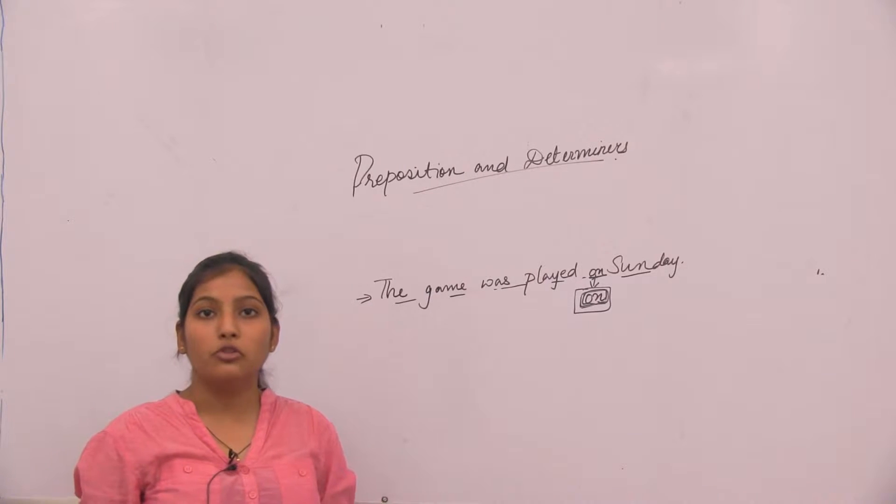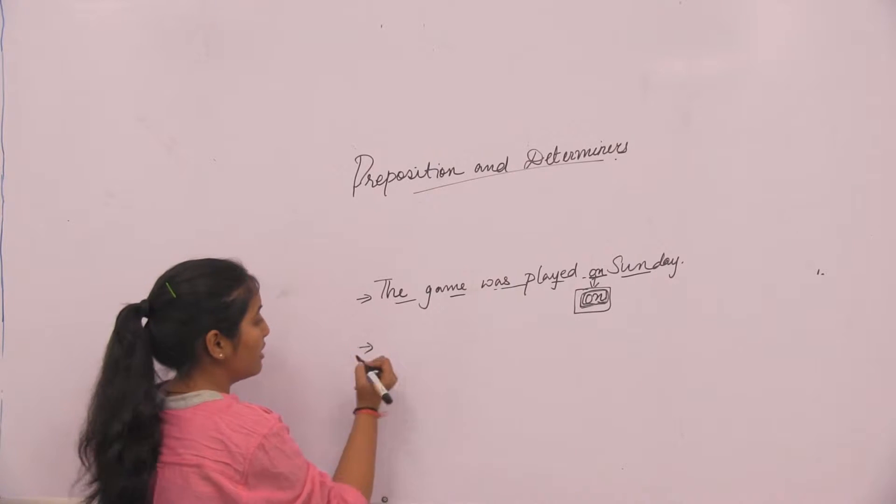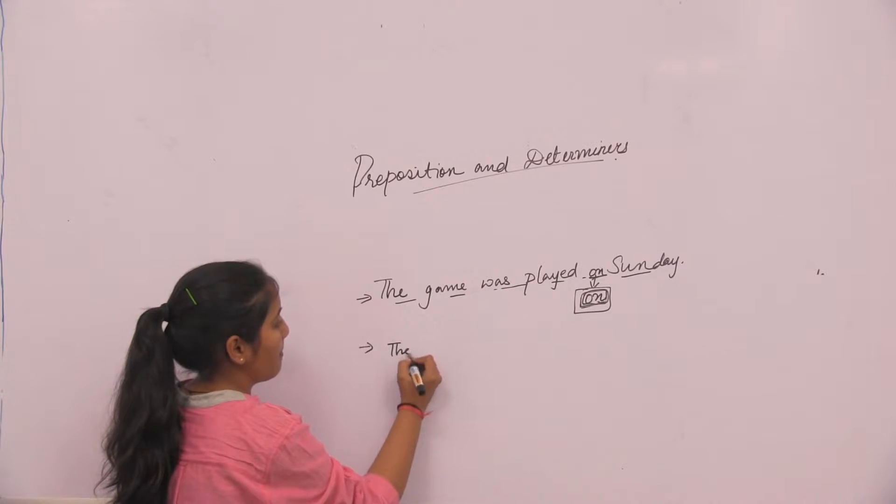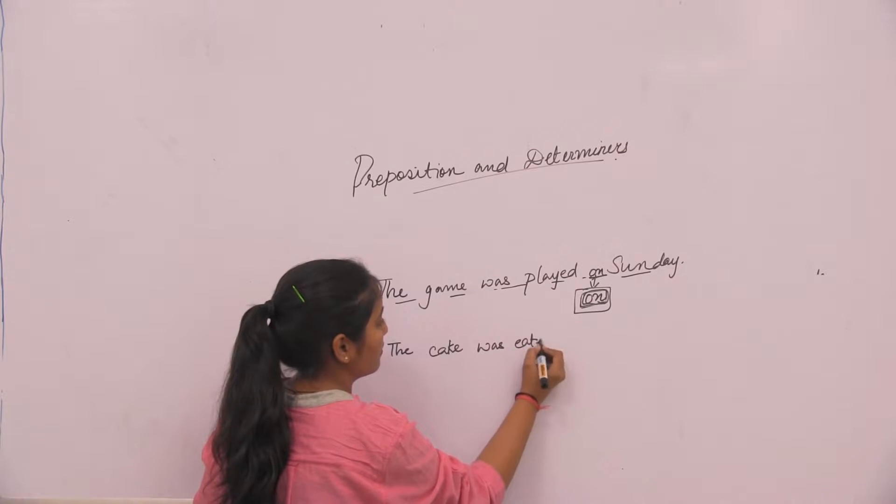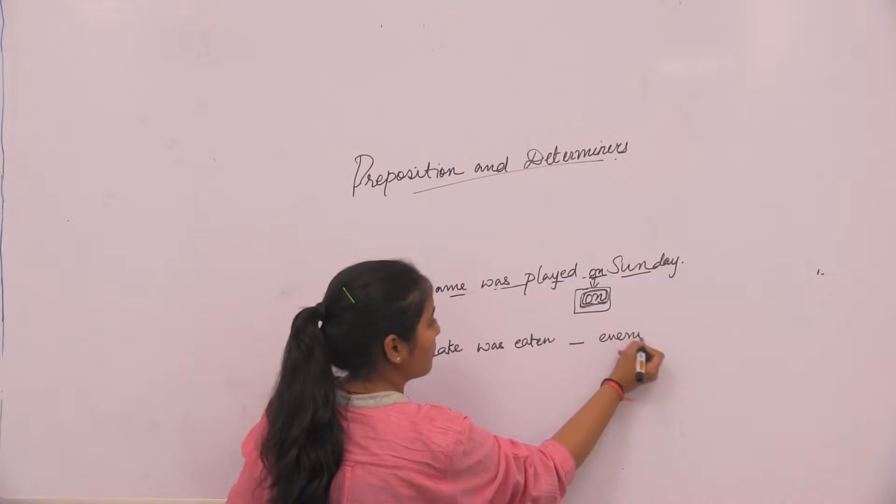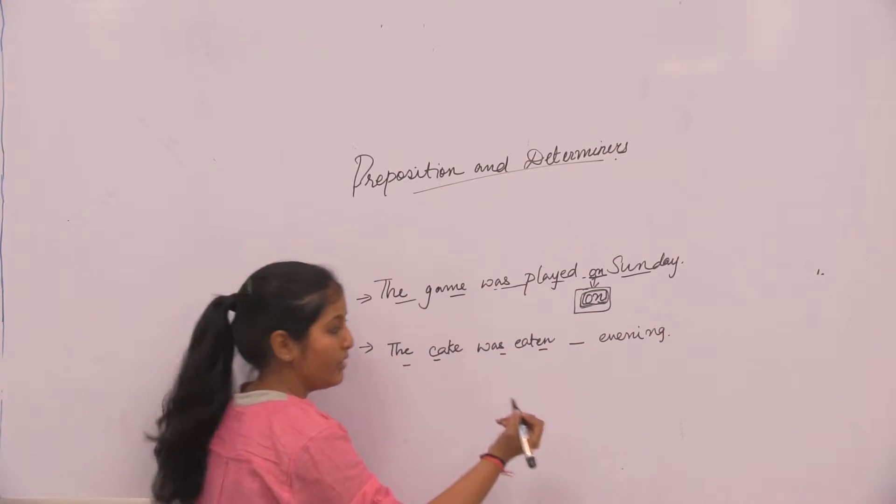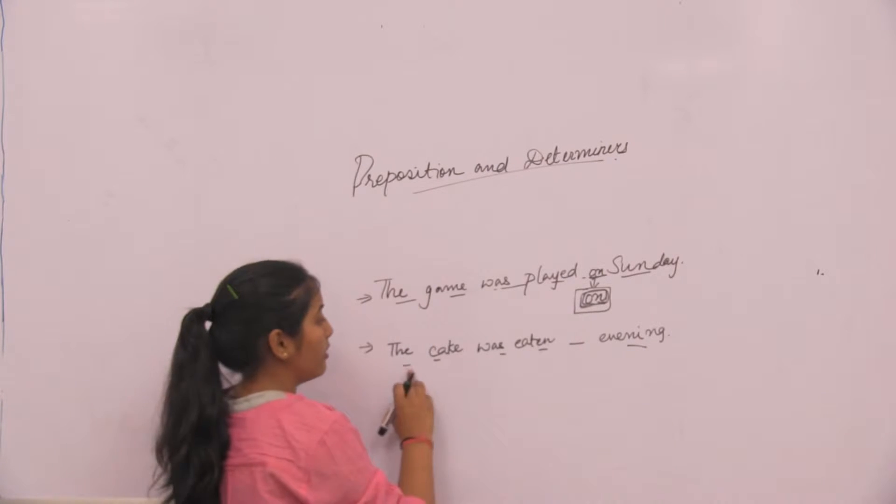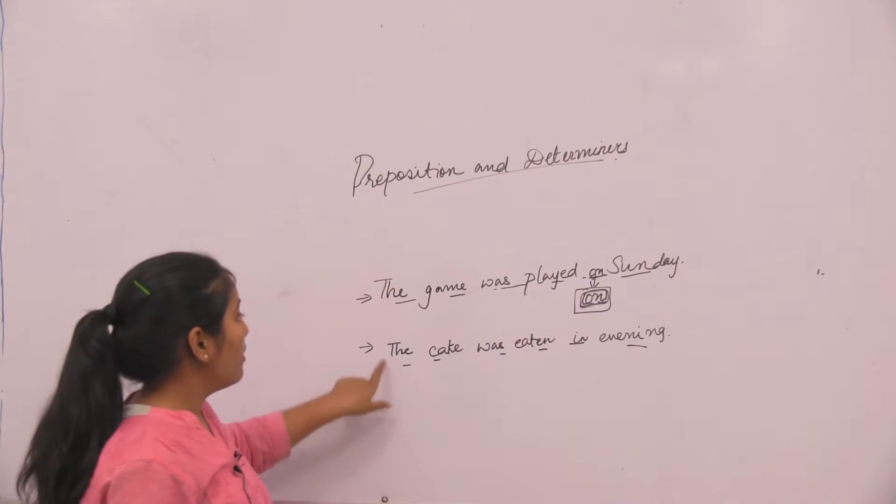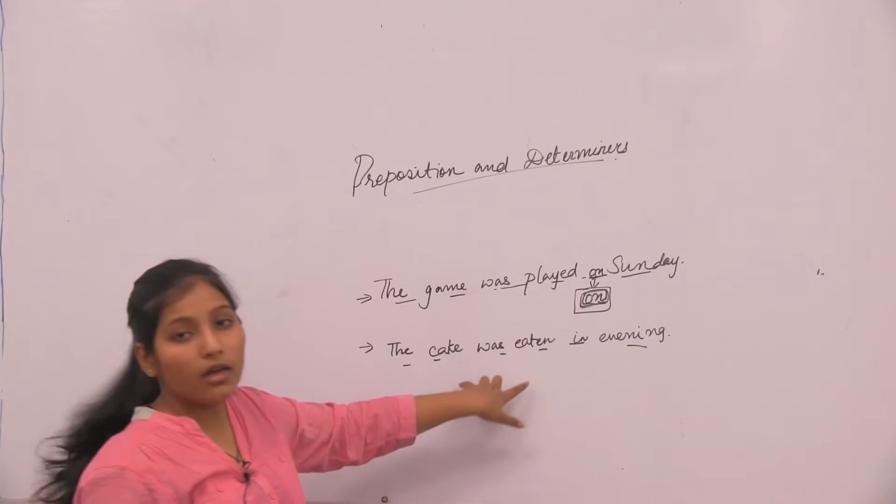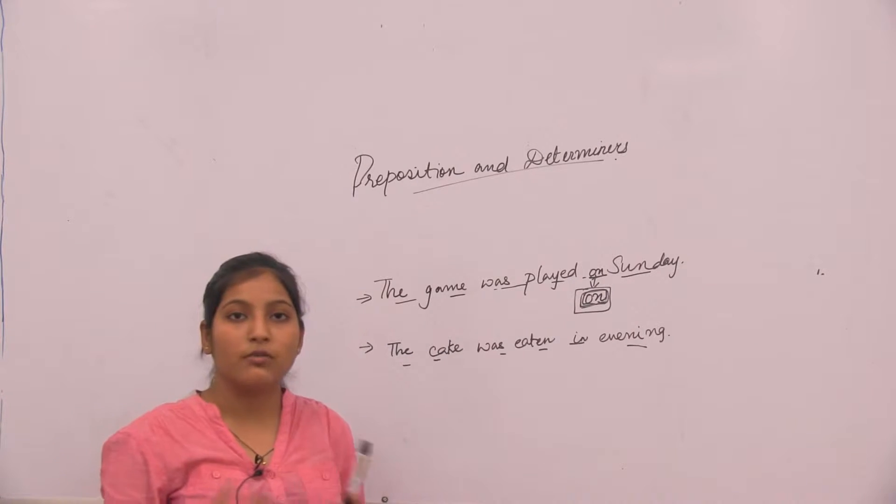The definition of preposition is that we use prepositions when we want to show the relationship between two things. Now we will take another sentence: the cake was eaten dash evening. What should we put here? The cake was eaten in the evening. Now the cake was eaten in the evening is a complete sentence.